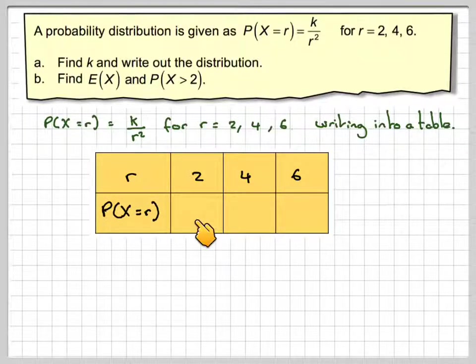So this will be probability X is equal to 2, this is the probability X is equal to 4 and this is the probability that X is equal to 6. So the first one is going to be k/r², so it's going to be k/2² which is 4. The next one is going to be k/4² which is k/16. The next one is going to be k/6² which is k/36.